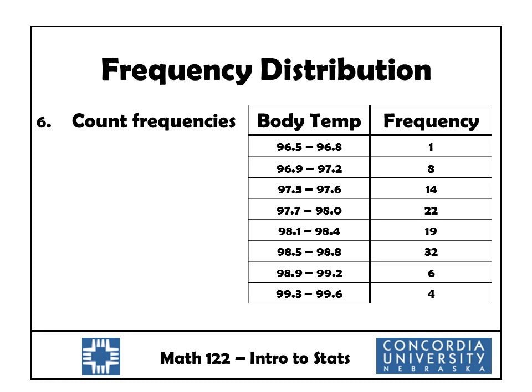The next step is we count the frequencies. We look over our list of data and count the number of data values between 96.5 and 96.8 — that comes out to be 1. Next, we count the number of data values between 96.9 and 97.2 — that comes out to be 8, and so on and so forth. That's a little tedious, not terribly complicated, but a little tedious. Most of the time we let the computer do the work. That right there is our frequency distribution — just a two-column table.